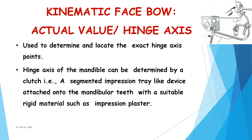Next is the kinematic facebow. This facebow is generally used for the fabrication of fixed partial dentures and full mouth rehabilitation. It is not used for complete denture fabrication because it requires a long and complex procedure to record the orientation. It is used to determine and locate the exact hinge axis positions or points, and is known as actual value facebow, hinge axis facebow, or kinematic facebow.